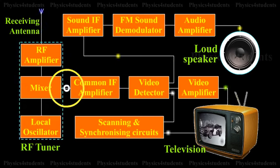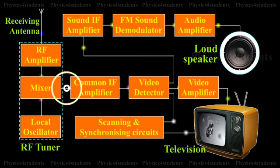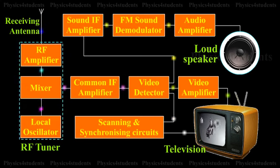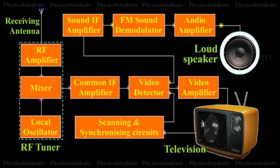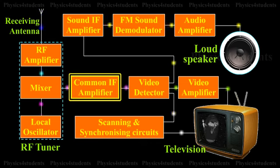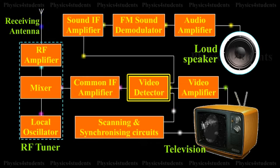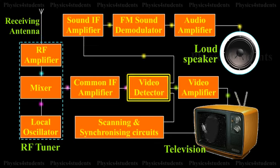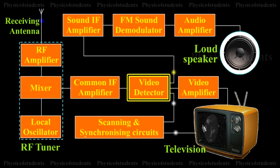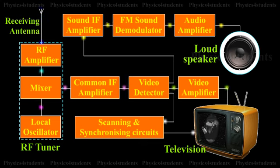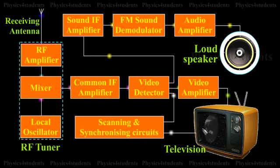The output signal from the tuner circuit is amplified by using a common IF amplifier. Then the video and audio components are separated by a detector. The sound signals are detected from FM waves, amplified, and then fed into the loudspeaker which reproduces the sound.